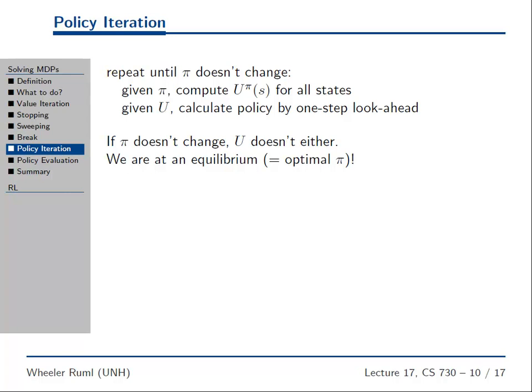Just like with the Bellman equations, when you reach an equilibrium of the policy, that is actually the optimal policy — and this one doesn't require iterating to infinity. The number of iterations is bounded by the number of policies, which is less scary. Though with value iteration on a computer using floating point, you're always improving the value function and you're bounded by the number of different floating point numbers you can represent.